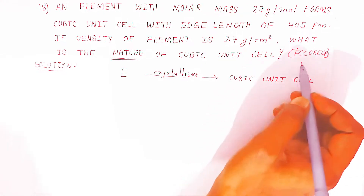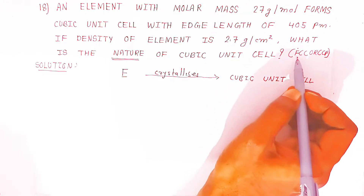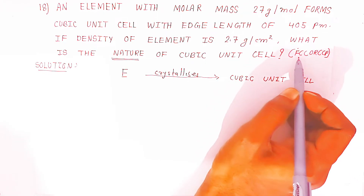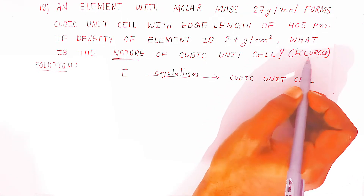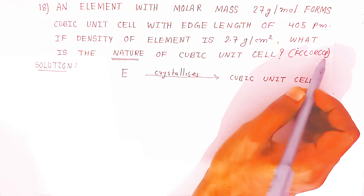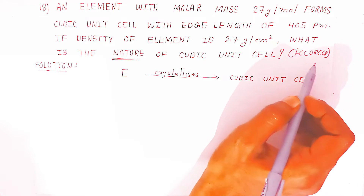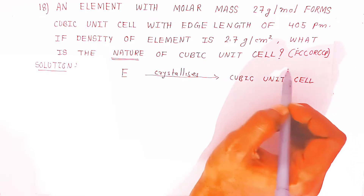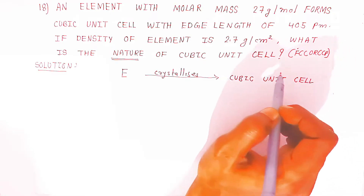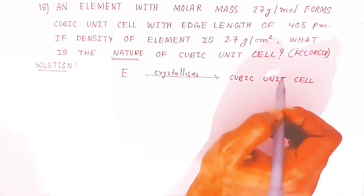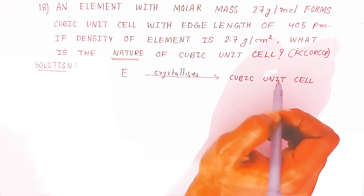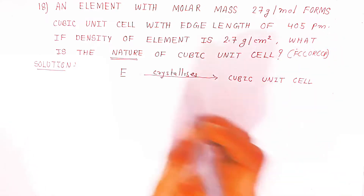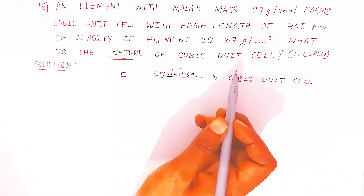The answer is coming out to be face centered cubic unit cell, also called cubic close packed structure. This is a three mark question asked in board exams, and we have to find the nature of the cubic unit cell.